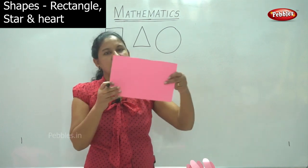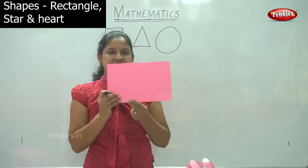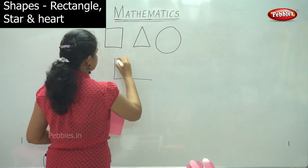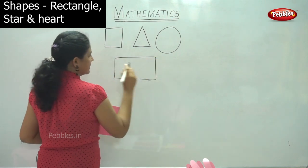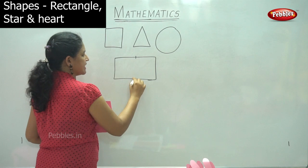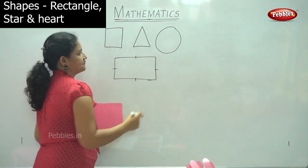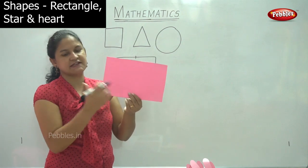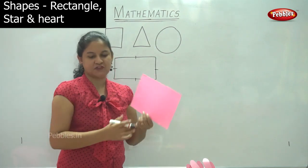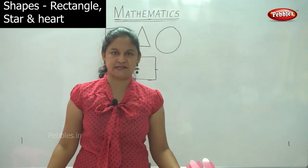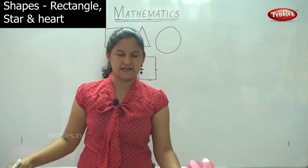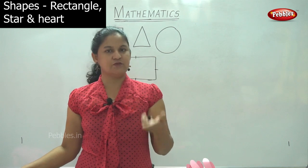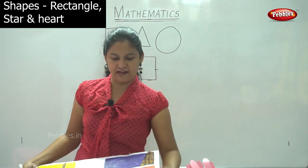The first shape I am going to show you is a rectangle. This is a rectangle. In a rectangle, the opposite sides are equal. I will show you some examples of a rectangle — these are examples we use every day and see in our everyday life.